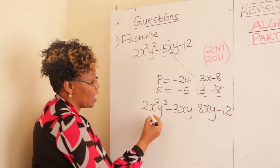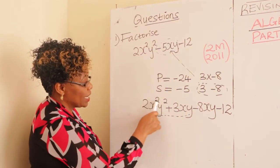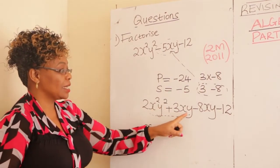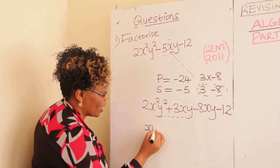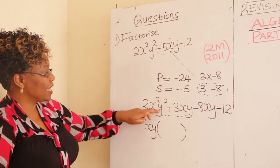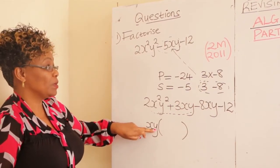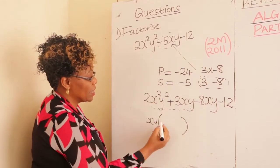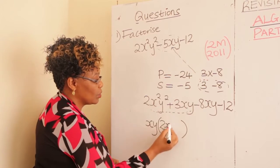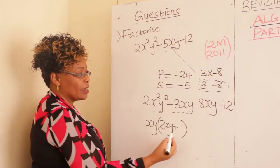From there, factor out what is common in the first two terms. You have x squared and x — factor out x. You have y squared and y — factor out y. So, xy is common in the two. What will you be left with inside the bracket? 2x squared y squared divided by xy leaves 2xy. Then 3xy divided by xy gives you 3. So you have xy times the quantity 2xy plus 3.